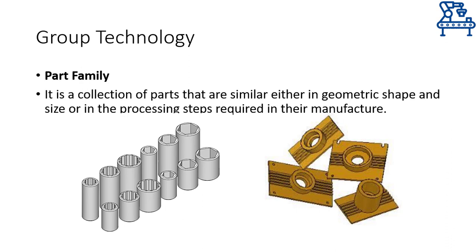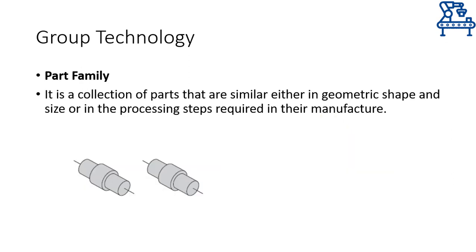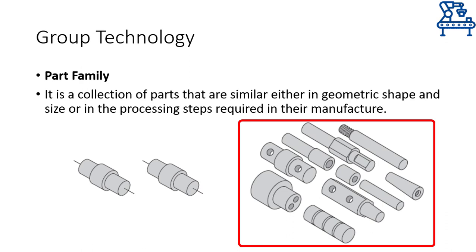A part family is a collection of parts that are similar in either of two aspects: geometric shape and processing steps. Geometric shape means all the parts in a family have similar shape — for example, two parts that look quite similar but have slightly different dimensions and material can be grouped into a family based on geometric shape. On the other hand, parts that look different but are all manufactured through lathe, milling, and drilling machines only can also form a family, with a machine cell specializing in manufacturing that part family.